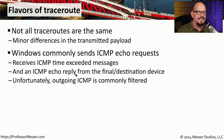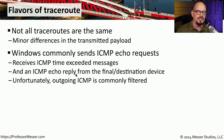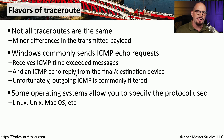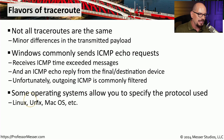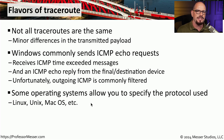As mentioned, ICMP is often filtered, so you may find that sometimes the information you're looking for doesn't make it back to your console. Other operating systems or different versions of traceroute might allow you to change what type of payload is being sent out. If you're running Linux or macOS, you might have options available at the command line to customize your traceroute messages.